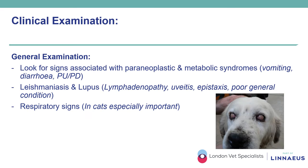The general clinical examination is of paramount importance, especially because it enables us to look for signs associated potentially with paraneoplastic or metabolic diseases, such as vomiting, diarrhea, polyuria, polydipsia, or other conditions such as Leishmania or systemic lupus — specifically looking at lymphadenopathy, uveitis, epistaxis, or simply poor general condition. In cats, it is especially important to evaluate the presence of respiratory signs.